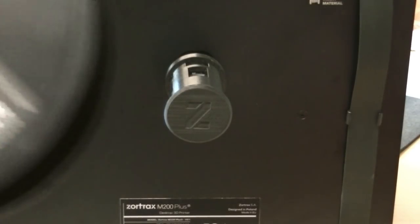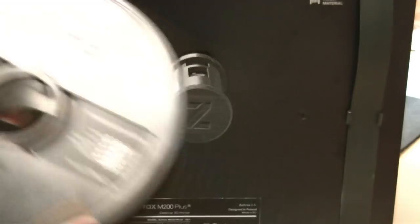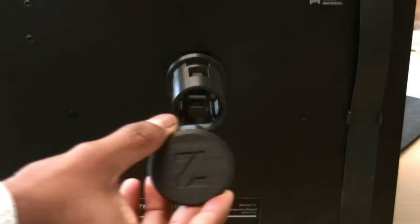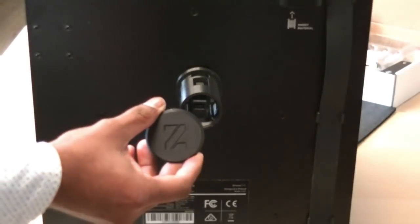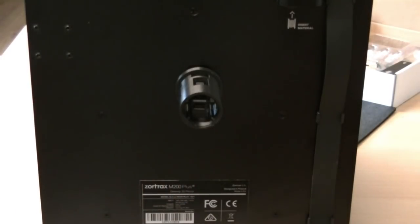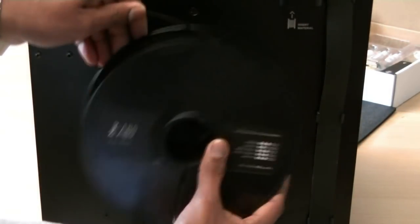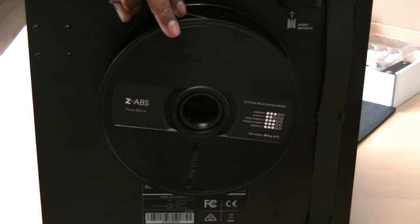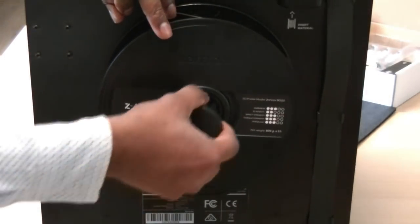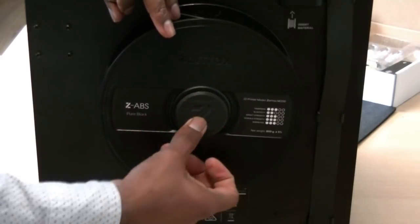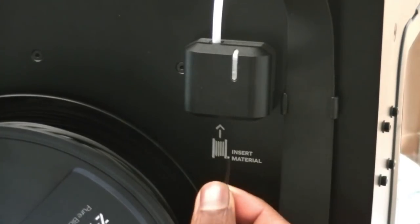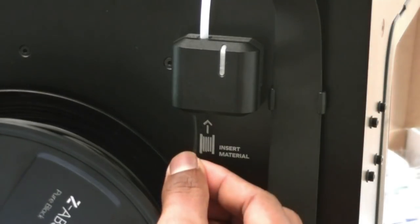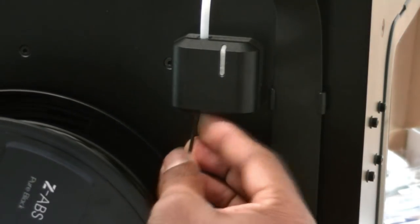Right now we're going to load the filament. Simply click this in. Take the top cover out. You place the filament and plug this in. We just have to take the other side part of the filament and pass it through the end stop.